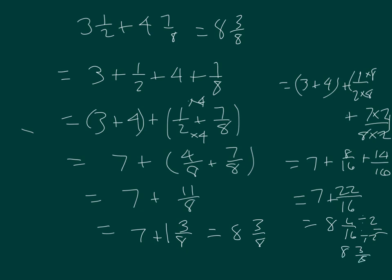So it equals the same answer: 8 and 3 eighths. There is more than one way to solve a problem. The key is to get a common denominator, renaming fractions into like units, so that you can add them.